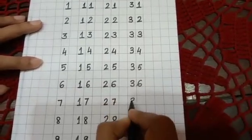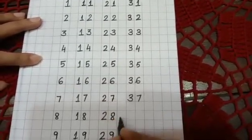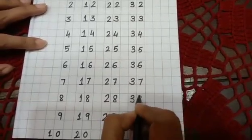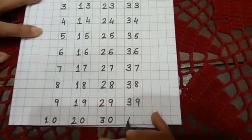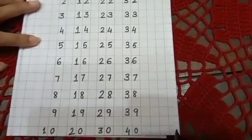3-6, thirty-six, 3-7, thirty-seven, 3-8, thirty-eight, 3-9, thirty-nine, 4-0, forty.